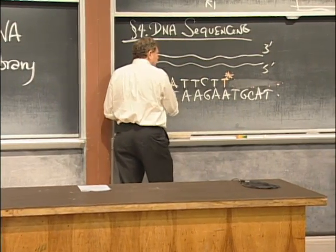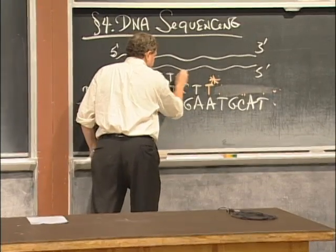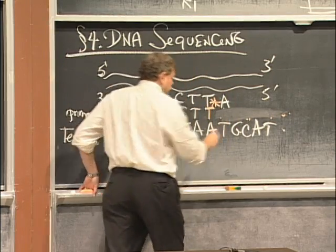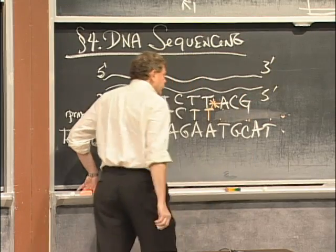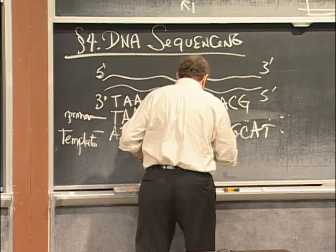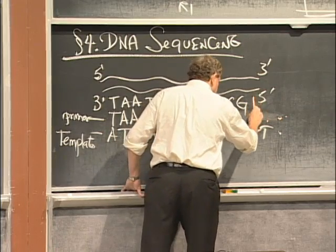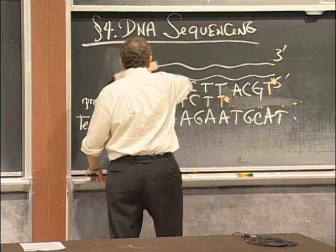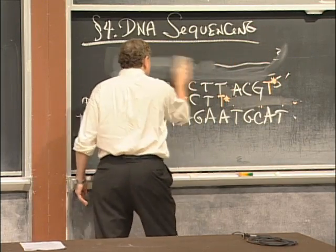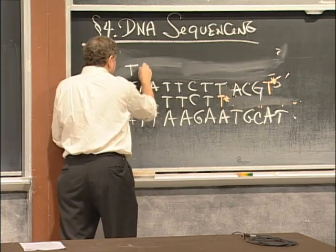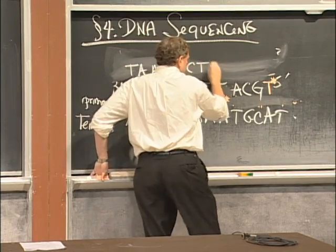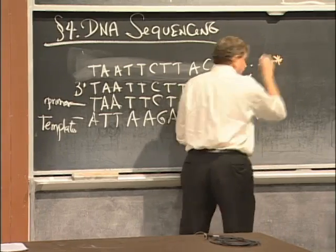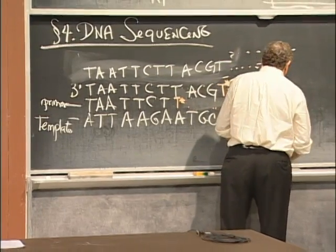But what happened if I put in a good T? Then instead, what would the next base be? A. Then what would happen? C. G. Then what's next? T. And what would happen if I put in a defective T? It would stop. Now, maybe instead the defective T didn't go in. And it would go on. And the next T that it encounters, maybe it would put a defective T there. Or maybe it would put a defective T there.